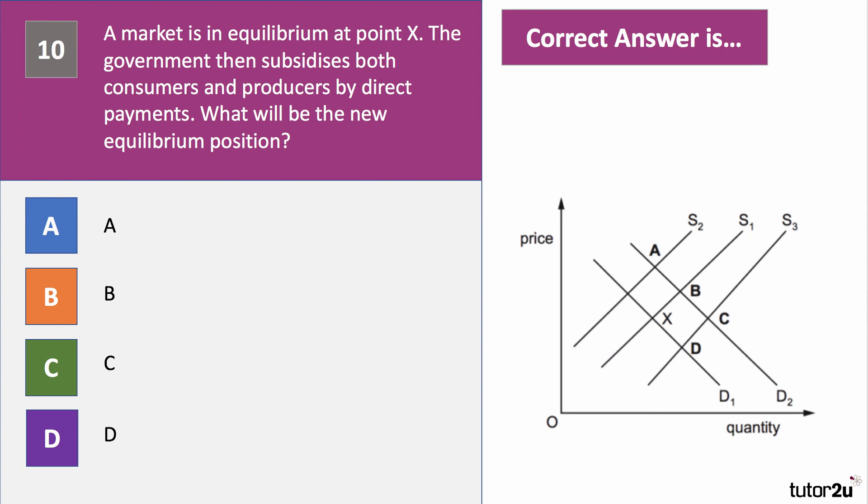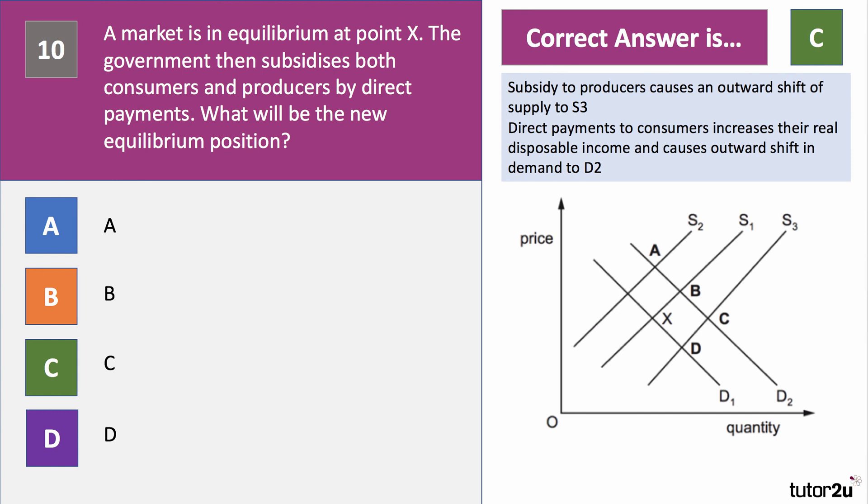There are two effects. A subsidy to the producer shifts the supply curve outward from S1 to S3, so it's going to be either C or D. But the direct payment to consumers shifts demand out to D2. The right answer is C. The subsidy to producers causes an outward shift of supply to S3, and the consumer subsidy increases consumers' real disposable incomes, causing an outward shift in demand to D2 — assuming it's a normal good. Hence the answer to question 10 is C.